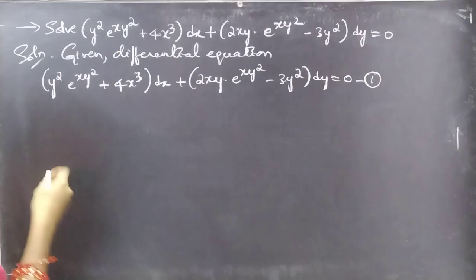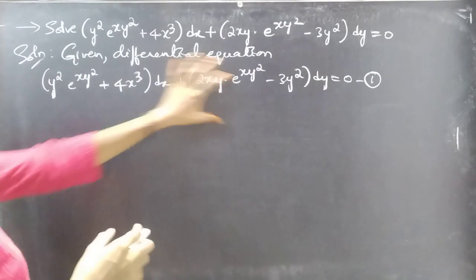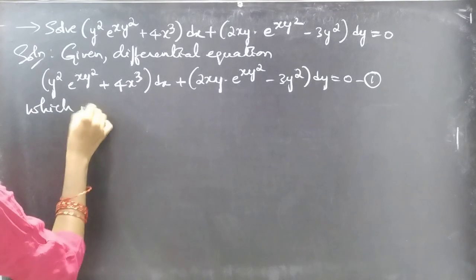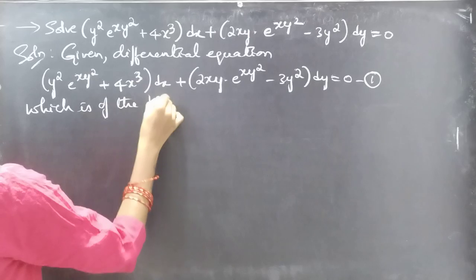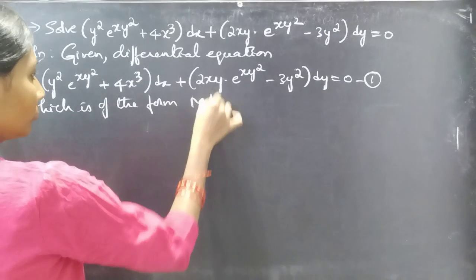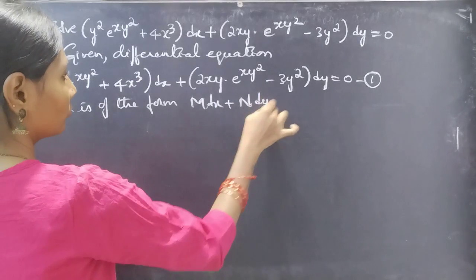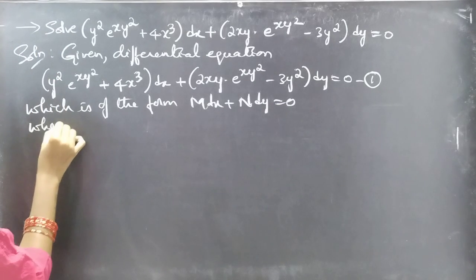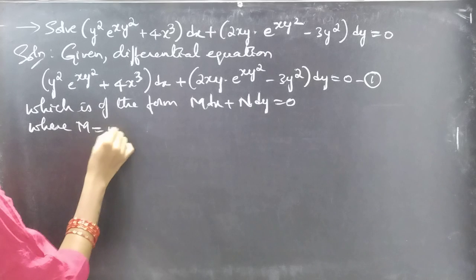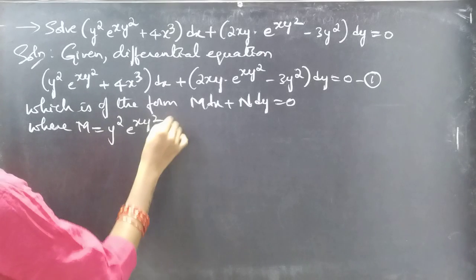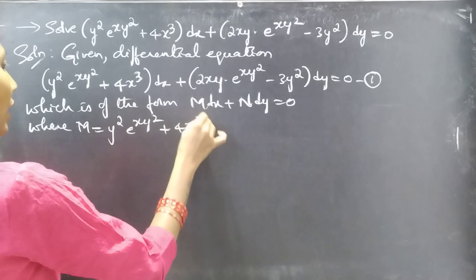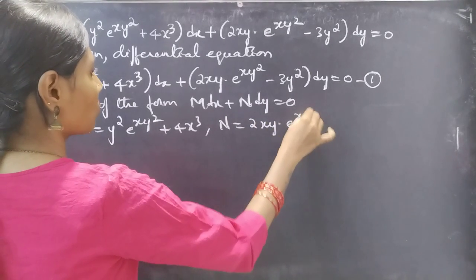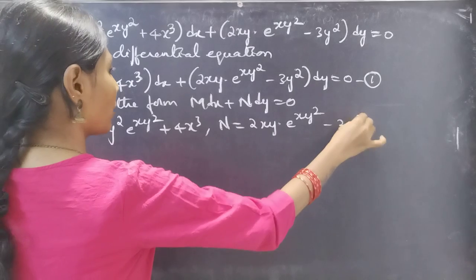Given differential equation is considered as equation number 1, which is of the form M dx + N dy = 0. By comparing these two equations, we get M = y² e^(xy²) + 4x³ and N = 2xy · e^(xy²) − 3y².